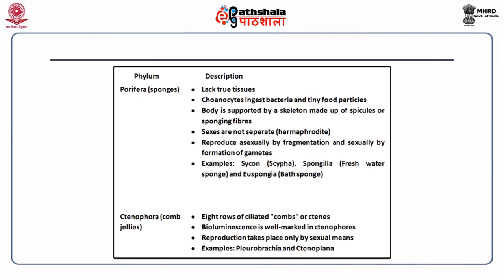Phylum ctenophora, otherwise known as comb jellies, have eight rows of ciliated combs or ctenes. Bioluminescence is well marked in ctenophores. Reproduction takes place only by sexual means. Examples include pleurobrachia and ctenoplana.